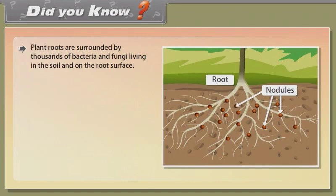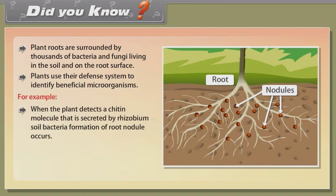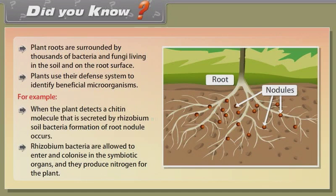Did you know? Plant roots are surrounded by thousands of bacteria and fungi living in the soil and on the root surface. Plants use their defense system to identify beneficial microorganisms. For example, when the plant detects a chitin molecule secreted by Rhizobium soil bacteria, formation of the root nodule occurs. Rhizobium bacteria are allowed to enter and colonize in the symbiotic organs, where they produce nitrogen for the plant.